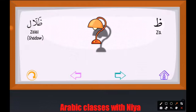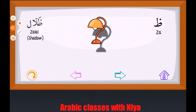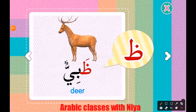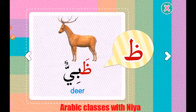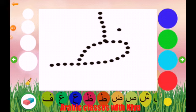Our next word is 'dhilal.' Let's repeat: dhilal. Dhilal means shadow. Now let's see one more word. Our next word is 'dhabiyy.' Let's repeat: dhabiyy. Now let's see how to write the letter tha.